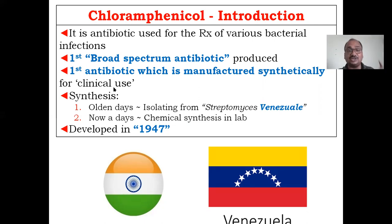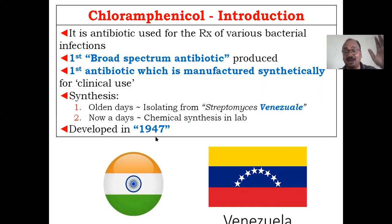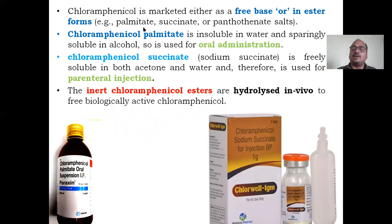Chloramphenicol is the first antibiotic manufactured synthetically for clinical use — that is a special distinguishing point. In olden days it was isolated from Streptomyces venezuelae — 'venezuelae' is actually a country name, which helps with memory. It was developed in the year 1947.